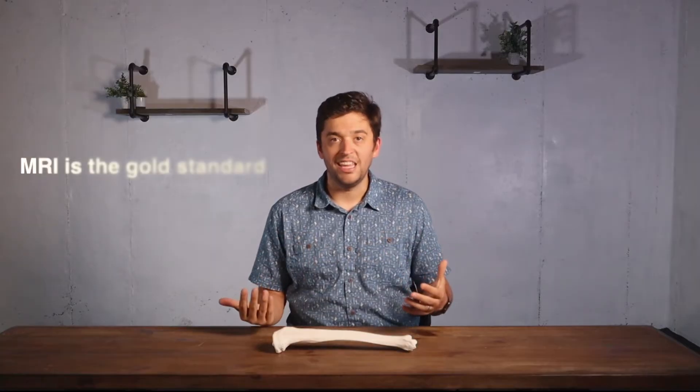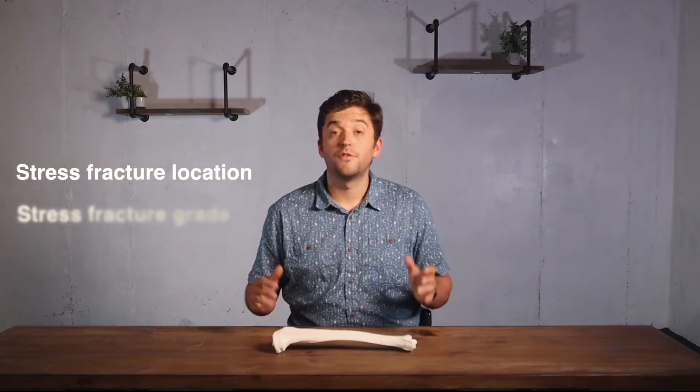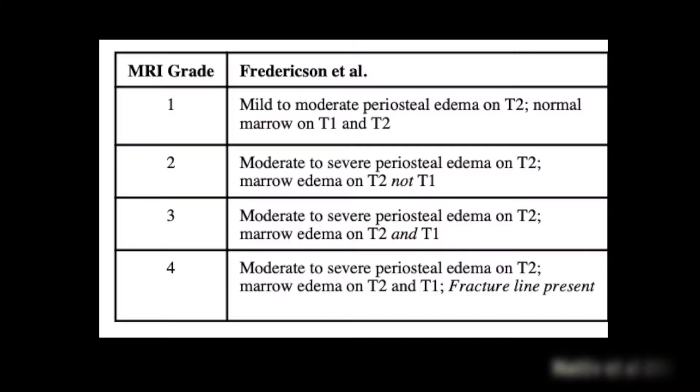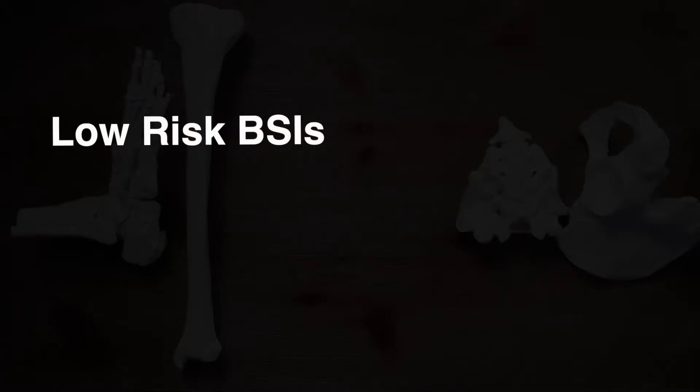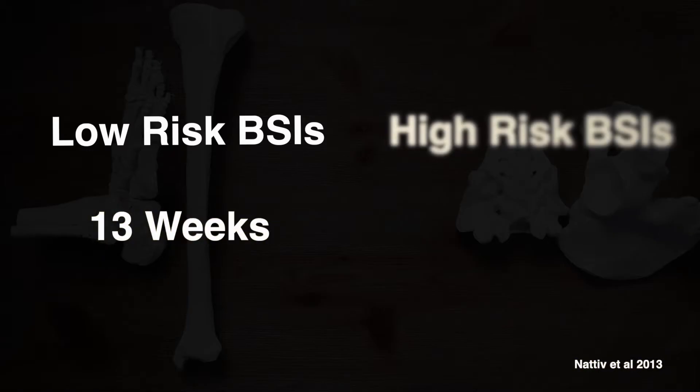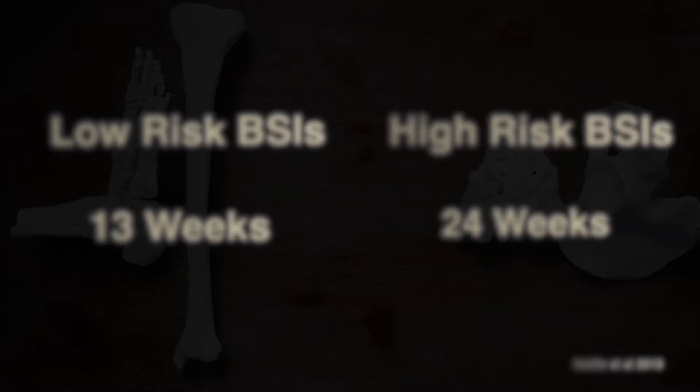This is why when your doctor tells you that you can run at four weeks after an injury, it's not necessarily the most helpful information — there's a lot that needs to happen before we say let's start running again. To get diagnosed with a stress fracture you'll need an image, normally an MRI, which will tell us the location and grade of the fracture. If we have a higher-grade stress fracture it's going to take longer to heal; a lower-grade fracture means a quicker return to running. Low-risk bone stress injuries tend to return to running at about 13 weeks after injury, while high-risk sites tend to be about 24 weeks.